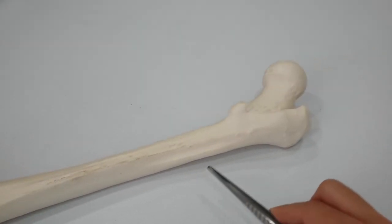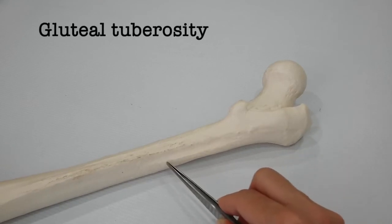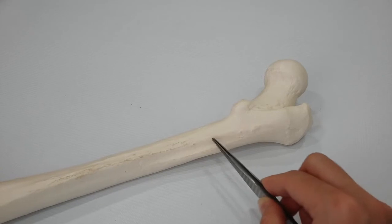On the posterior surface of the shaft below the greater trochanter is the gluteal tuberosity for the attachment of the gluteus maximus muscle.